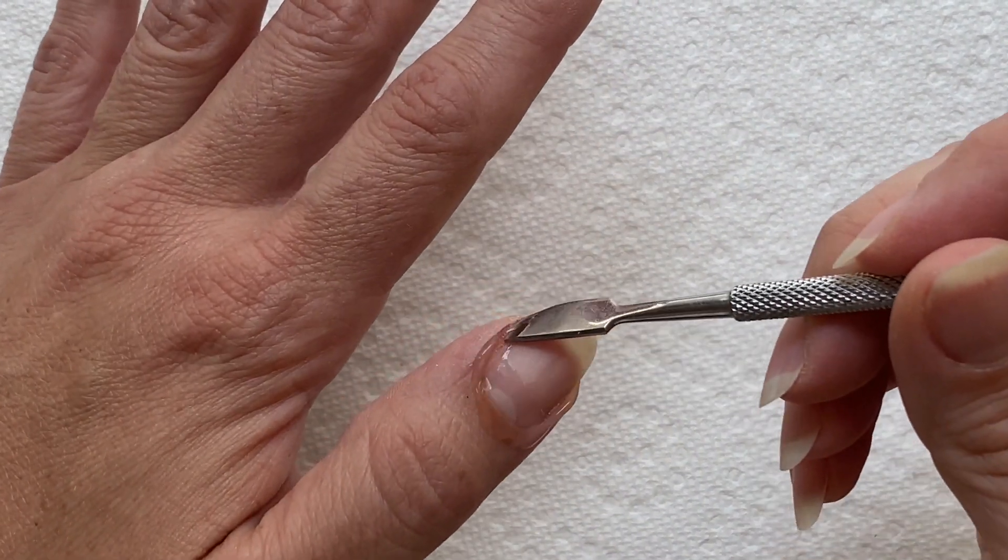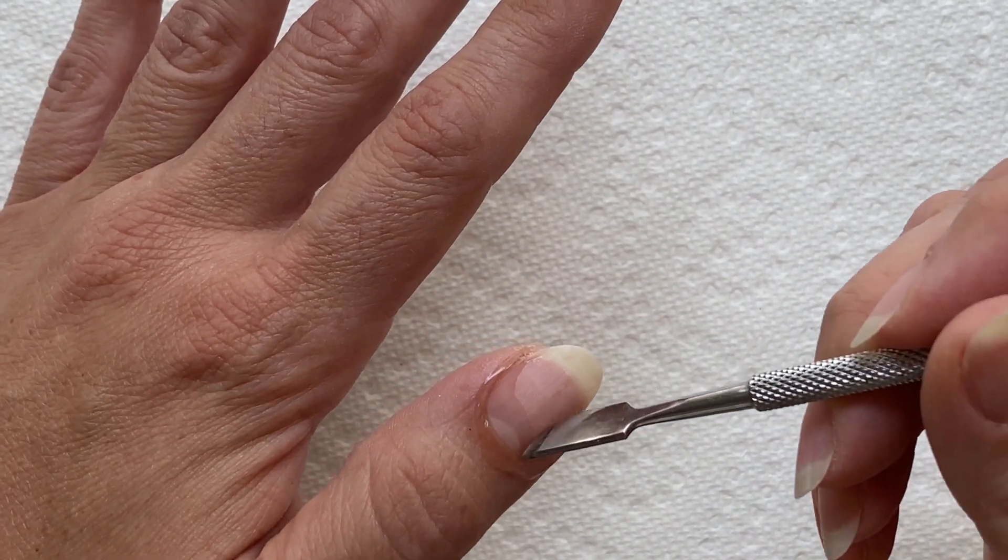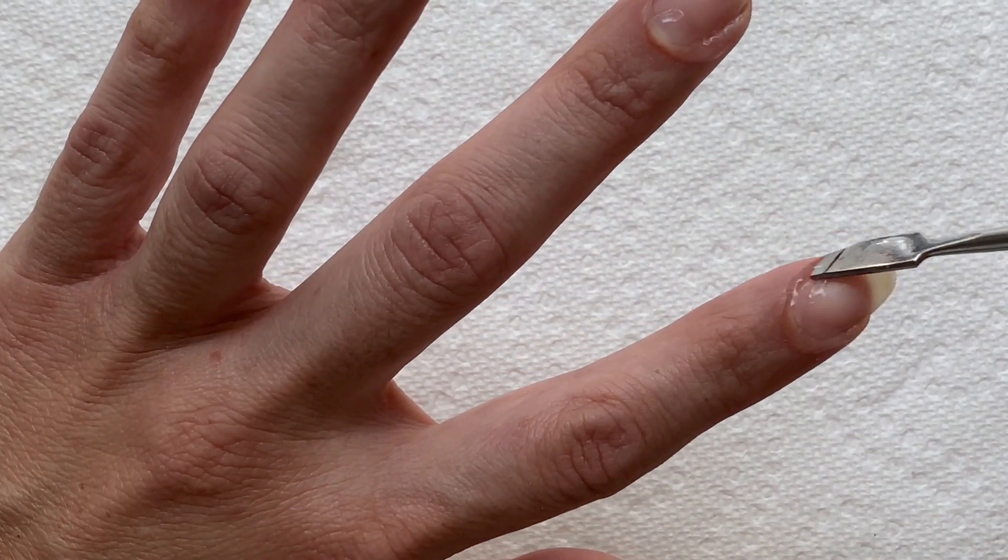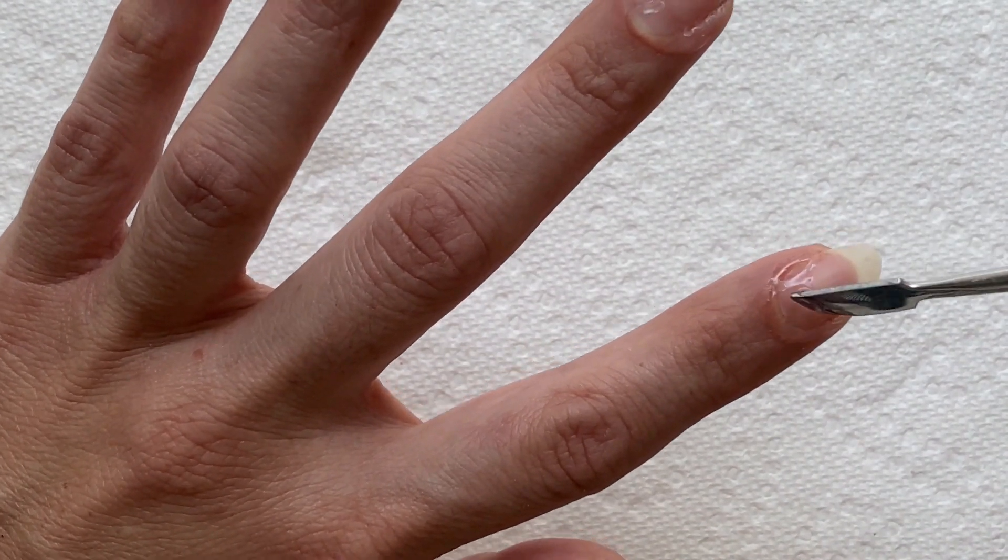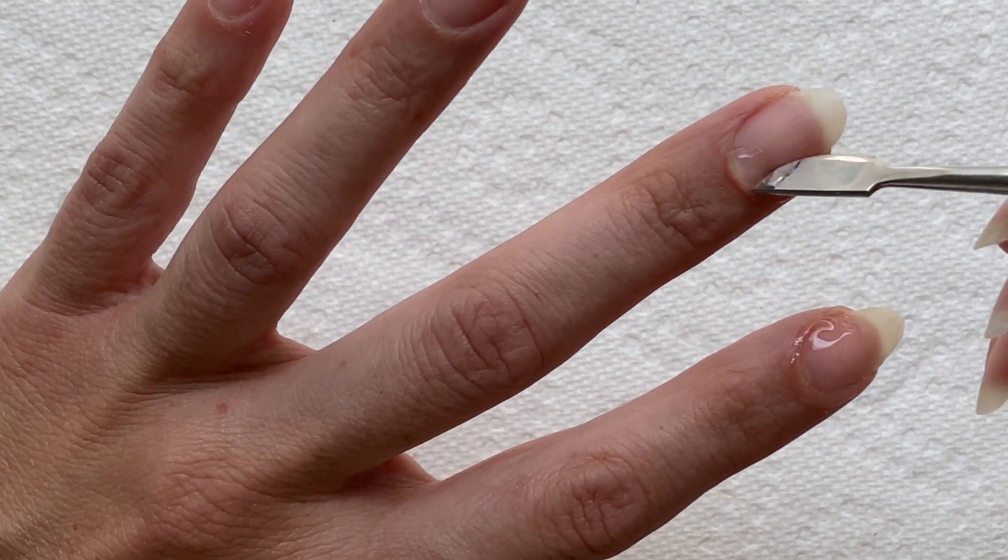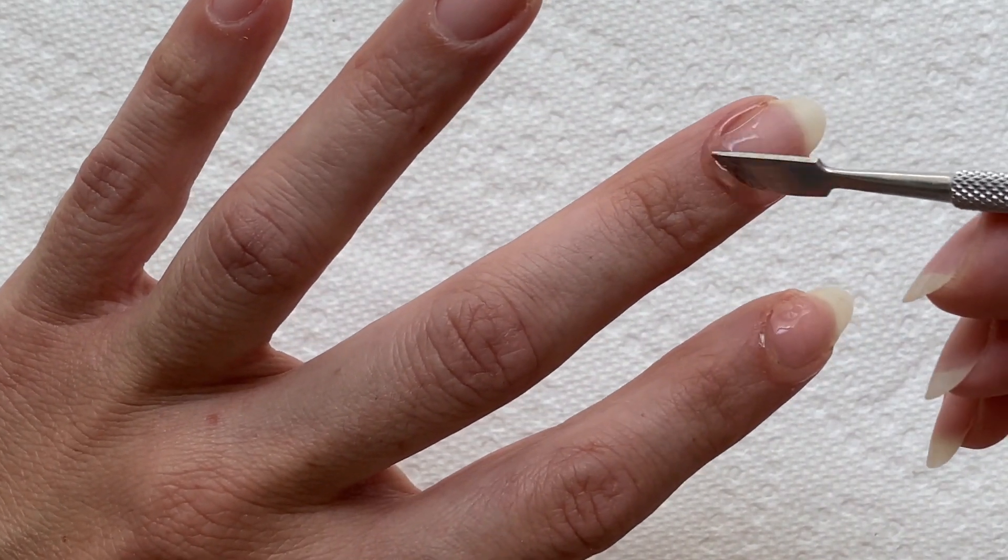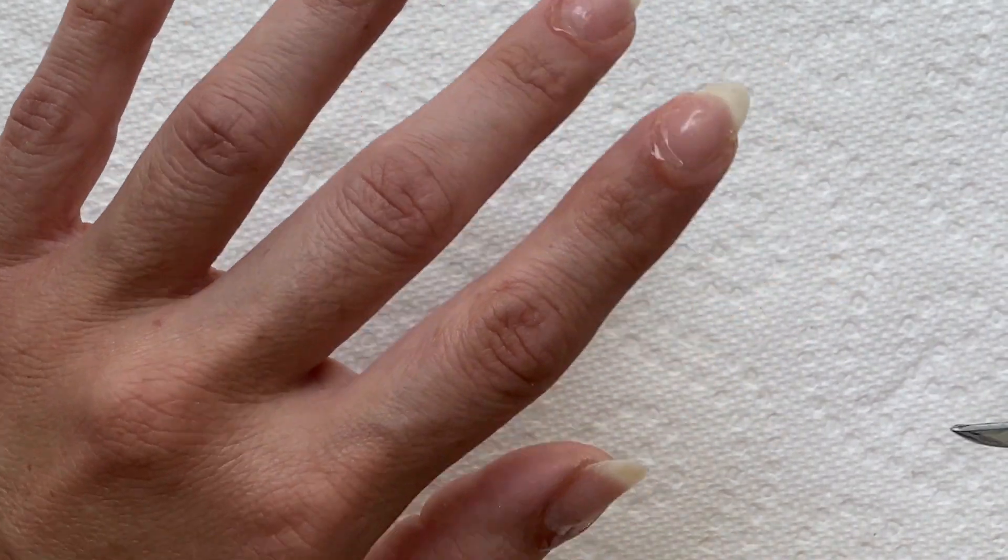But a couple things that you could do if you don't have cuticle remover and don't really want to waste any money on it is you can use a little bit of cuticle oil, even a little bit of lotion, like a more watery based lotion. You don't want to soak your whole fingers in it, just put it around the cuticle.